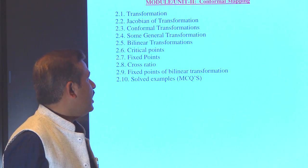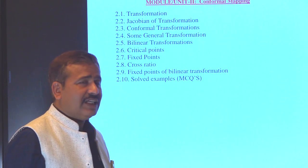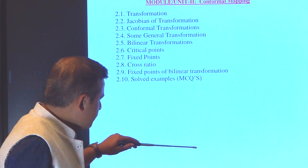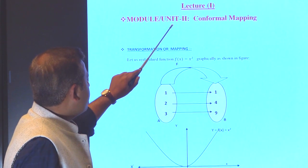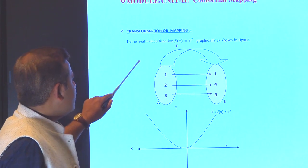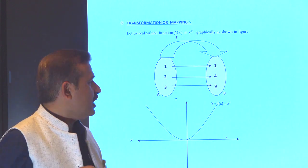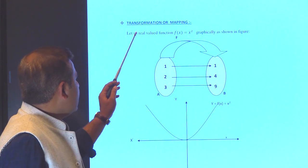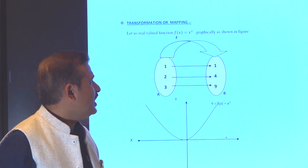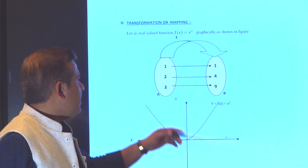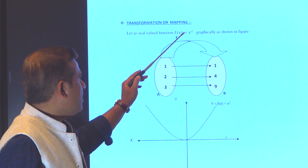This is a very important topic. In the first lecture, we look at what is transformation. Transformation means mapping. Let us consider the real valued function f(x) = x² graphically as shown in the figure. We have taken the simple example of the function f(x) = x².